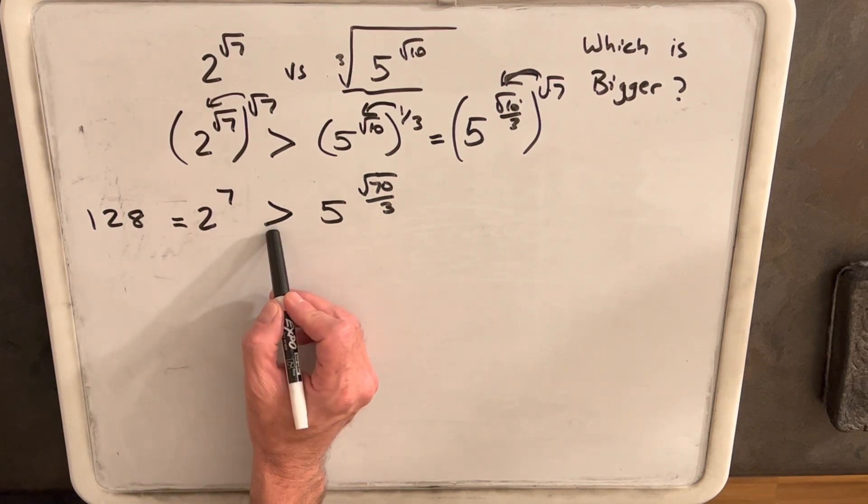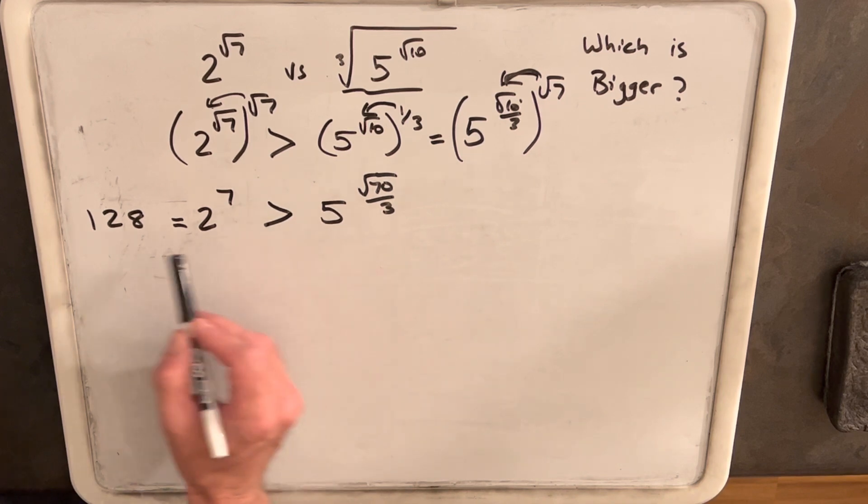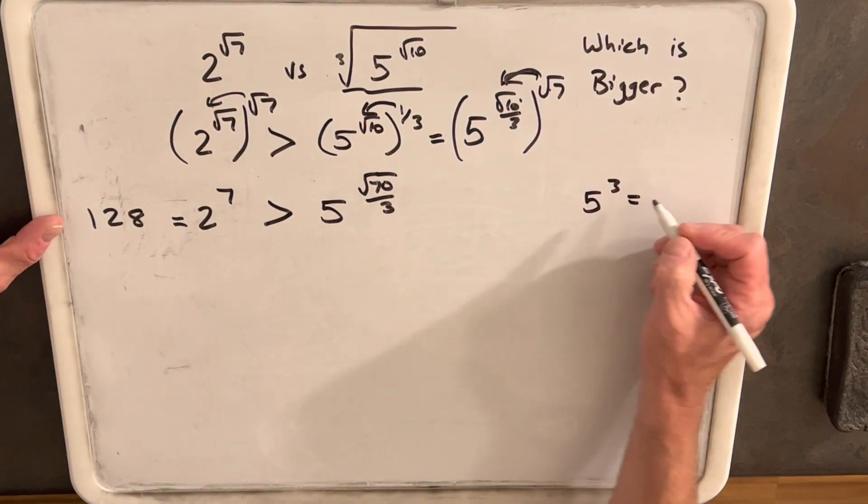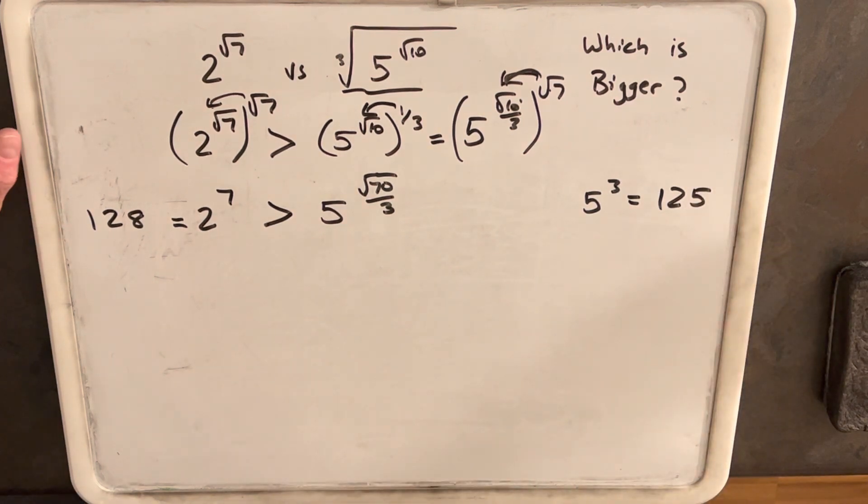And in this case, this is why we have our assumption that the left side is going to be greater. So we'd like to have a power of 5 that's less than 128. And we notice that 5 cubed is 125. So I think that would be a perfect point to compare to.